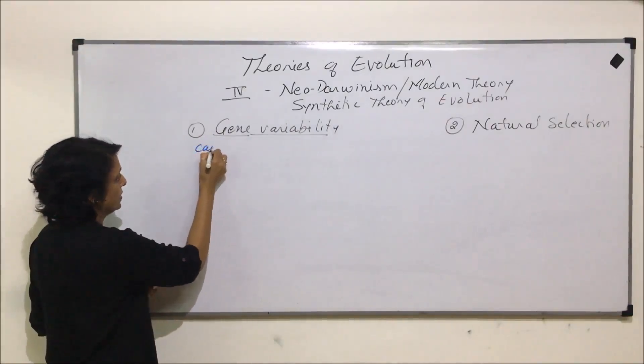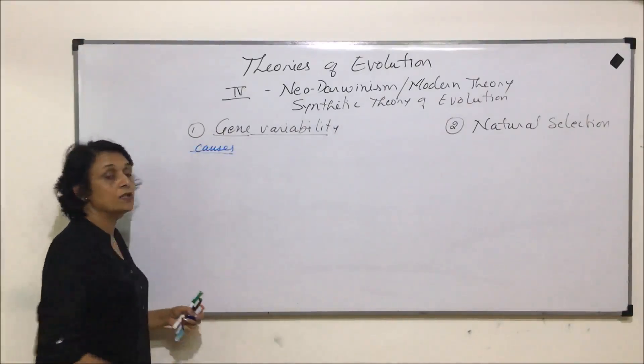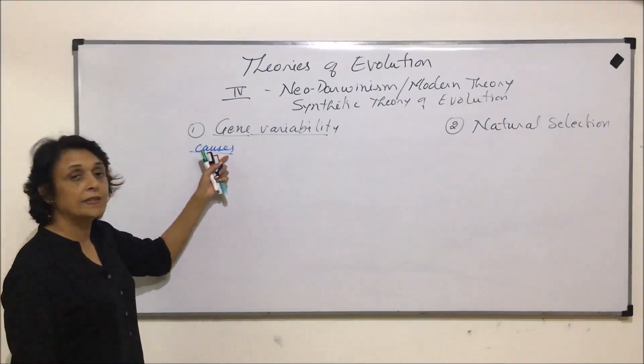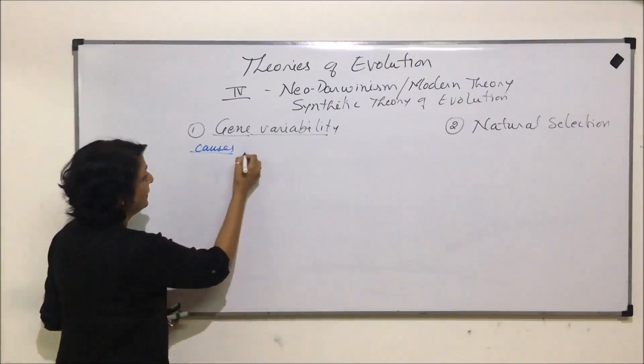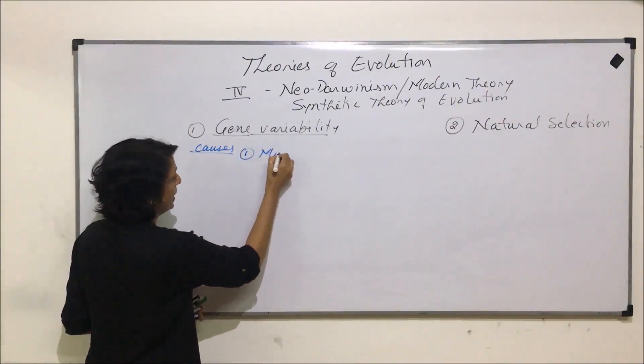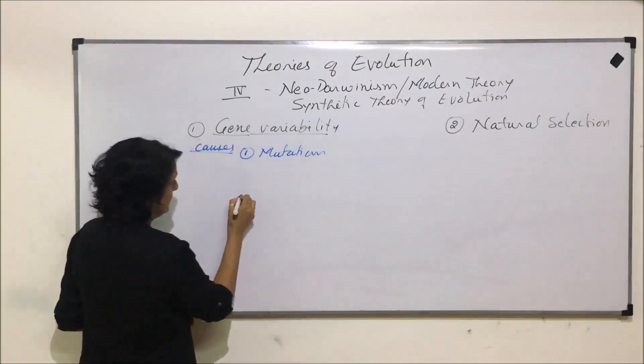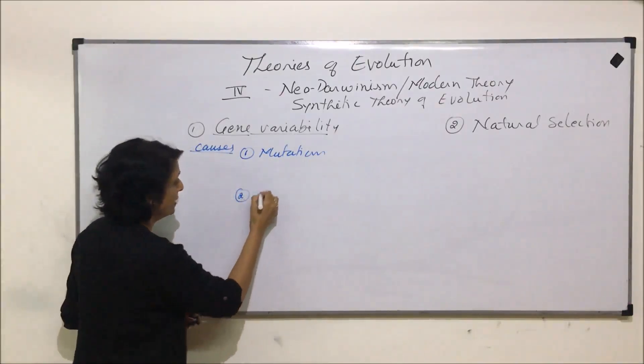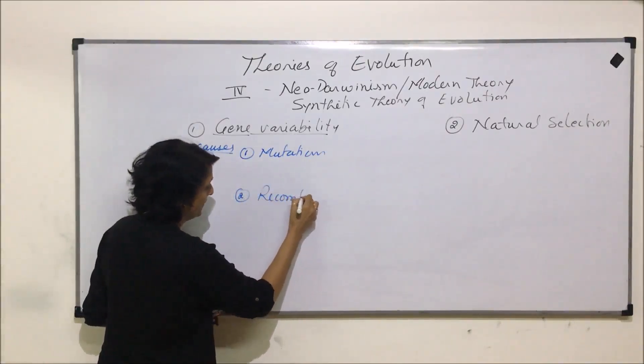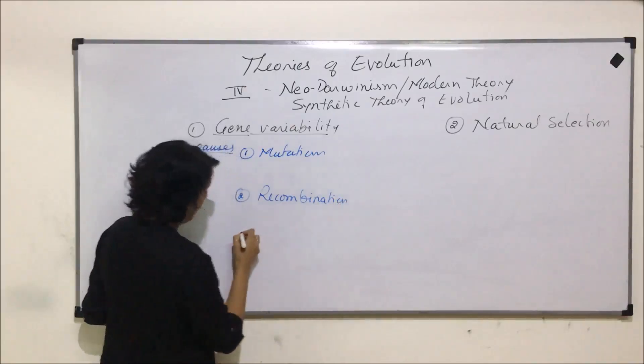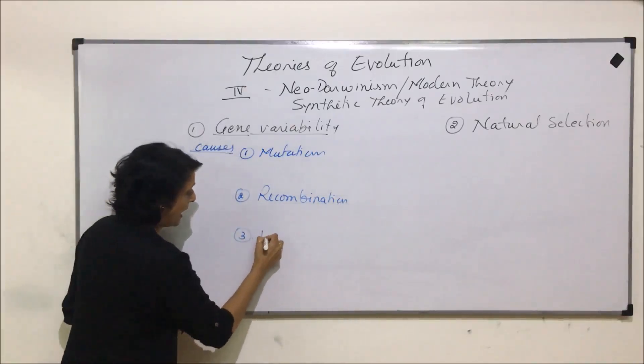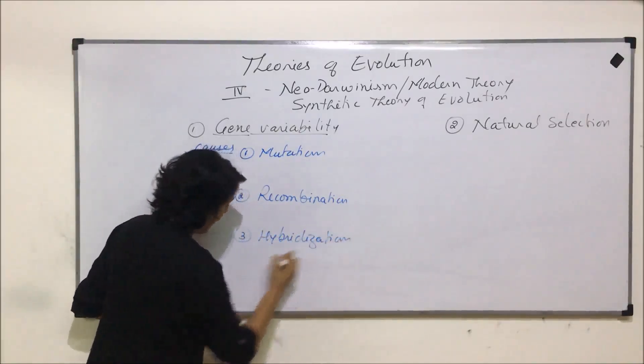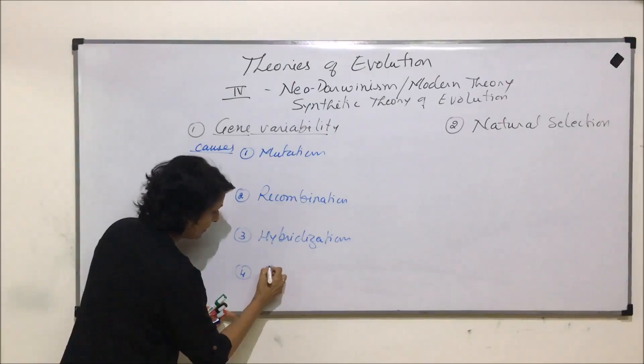Now what are the causes of this gene variability? There are four points or four reasons which are considered as the main causes. The first is mutation, which is responsible for these variations. Then recombination. The third cause is hybridization, and the fourth is genetic drift.